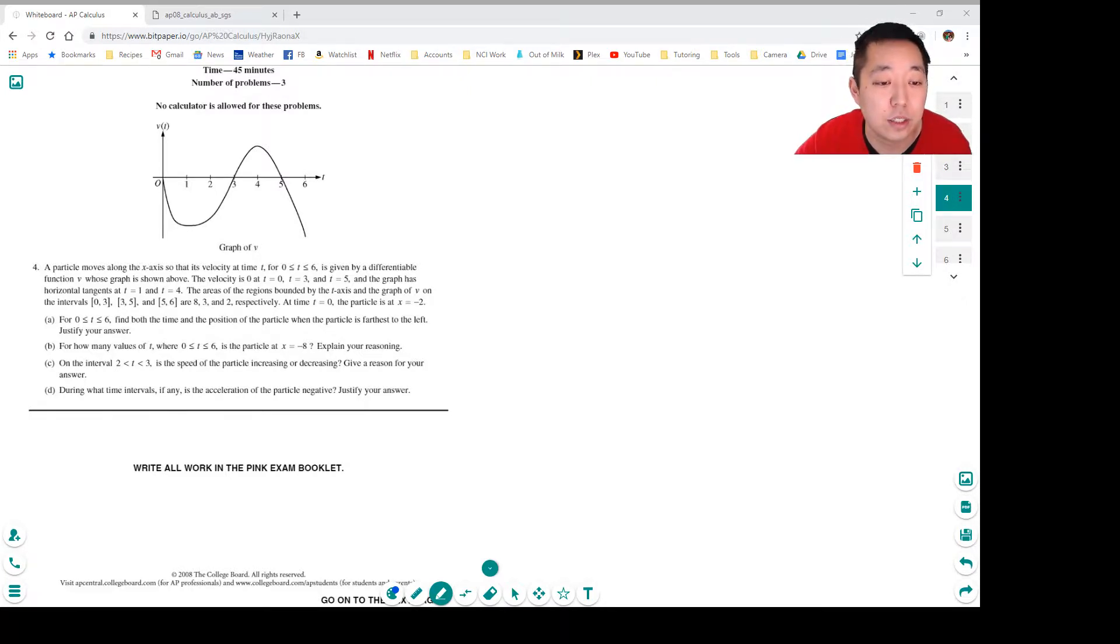A particle moves along the x-axis so that its velocity at time t is given by differentiable function v whose graph is shown above. The velocity is 0 at t equals 0, 3, and 5.